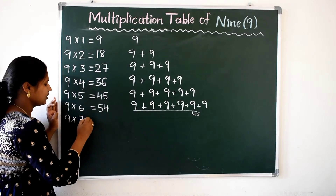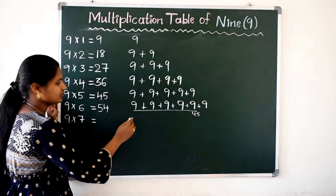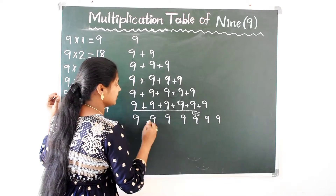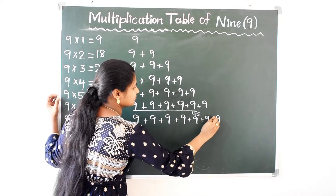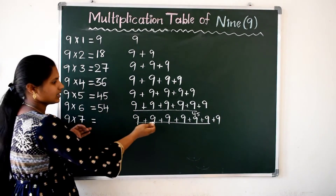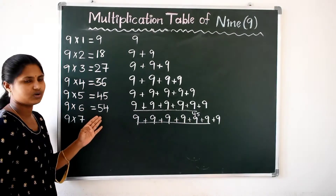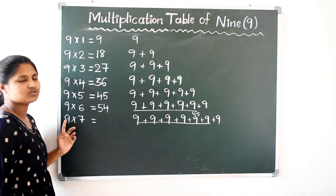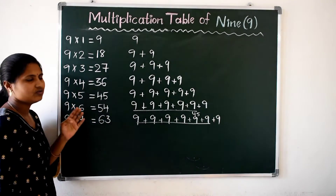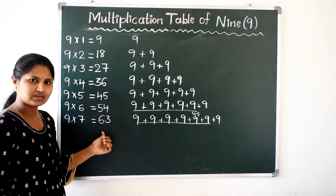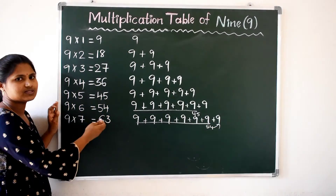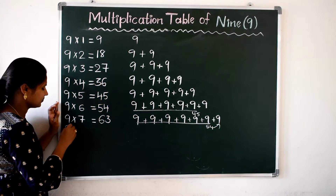Next, 9 7 times — 9 we have to write 7 times. We know up to here we got 54. If you add 9 to 54, so 9 7's are 63. If you add 54 to 9 we will get 63. Ok, 9 7's are 63.